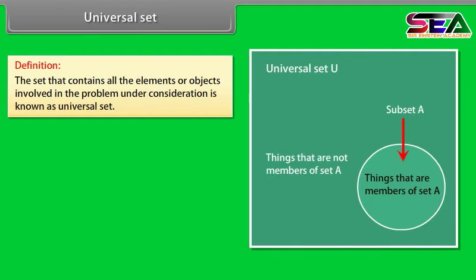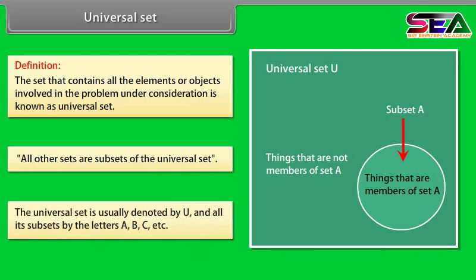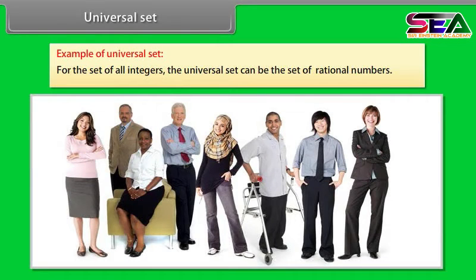Universal set. Definition: The set that contains all the elements or objects involved in the problem under consideration is known as universal set. All other sets are subsets of the universal set. The universal set is usually denoted by U and all its subsets by the letters A, B, C etc. Example of universal set: For the set of all integers, the universal set can be the set of rational numbers.